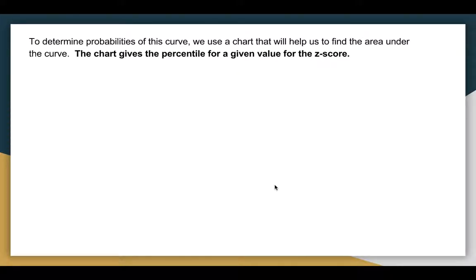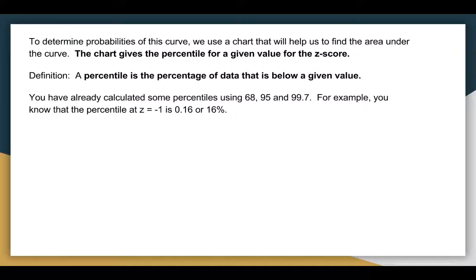And the chart gives you the percentile for a given value for the z-score. So we're going to use this chart. And again, you can do a Google image search for the normal distribution chart, and it'll come up right away. A percentile is the percentage of data that is below a given value. We already know that, we've already calculated some, 68, 95, 99.7.